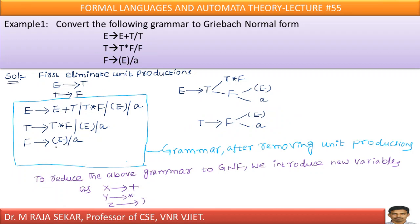What about the last one? F goes to left parenthesis E right parenthesis and F goes to A. Now we have removed all unit productions. Grammar after removing unit productions: to reduce this grammar to GNF, we introduce new variables. In the place of E, T, F — these are known as non-terminals. Whereas left parenthesis, right parenthesis, A, star, plus — all these are terminals.